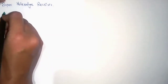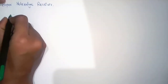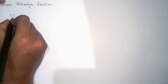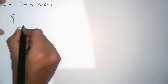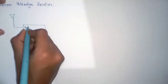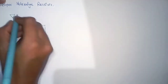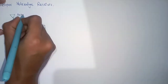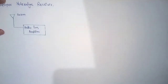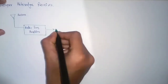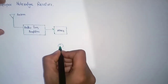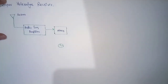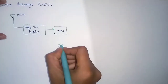In a super heterodyne receiver, at the receiver side we will be having an antenna, a radio frequency amplifier, and a mixer block. In this, the local oscillator signal will be passed.